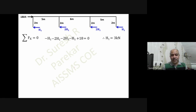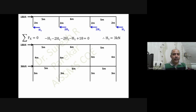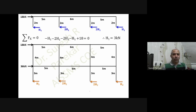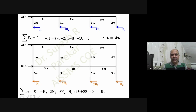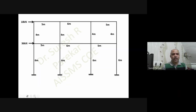Moving to the mid-height of the next story, we must consider all loads and the frame above it. We have 18 kilonewtons and 36 kilonewtons, so 6H2 equals 36 plus 18. From summation Fx equal to zero, we get H2 equal to 9 kilonewtons. So H1 is 3 and H2 is 9 kilonewtons.